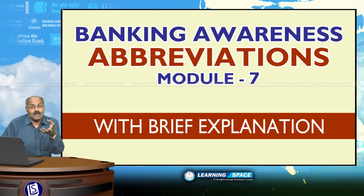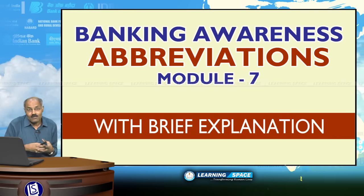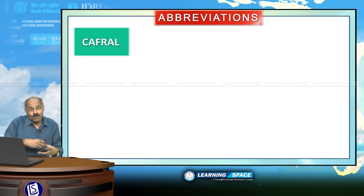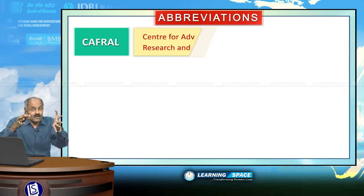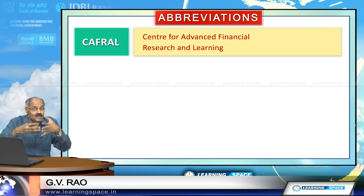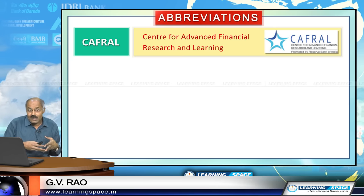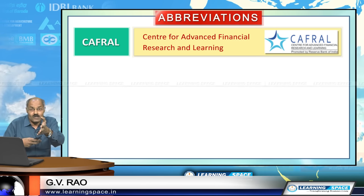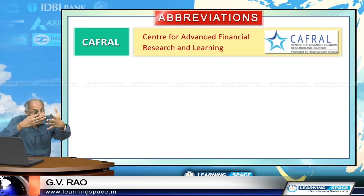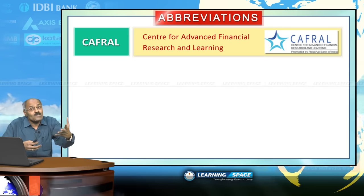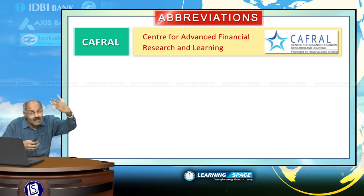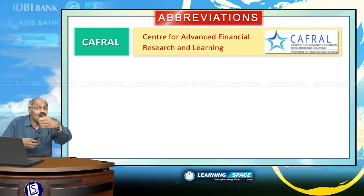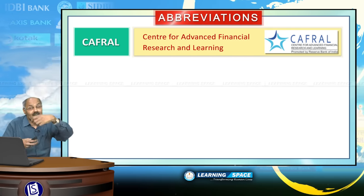Welcome back to the seventh module of this abbreviations series. The first one is CAFRAL — the Center for Advanced Financial Research and Learning. This is the institute established by the Reserve Bank of India, started functioning from Mumbai. The main purpose of this institution is to develop it into a global institution for research and learning in banking.